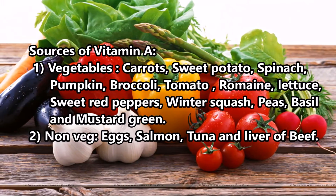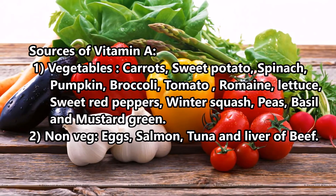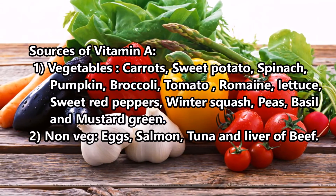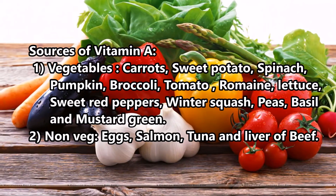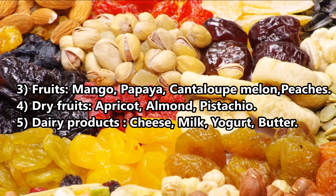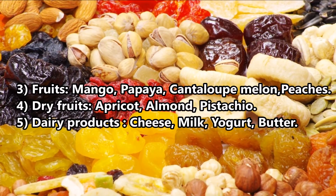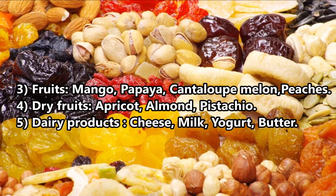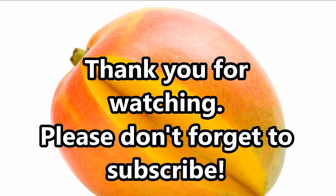Sources of vitamin A: 1. Vegetables — carrots, sweet potato, spinach, pumpkin, broccoli, tomato, romaine lettuce, sweet red peppers, winter squash, peas, basil, and mustard greens. 2. Non-veg — eggs, salmon, tuna, and liver of beef. 3. Fruits — mango, papaya, cantaloupe melon, peaches. 4. Dry fruits — apricot, almond, pistachio. 5. Dairy products — cheese, milk, yogurt, butter.